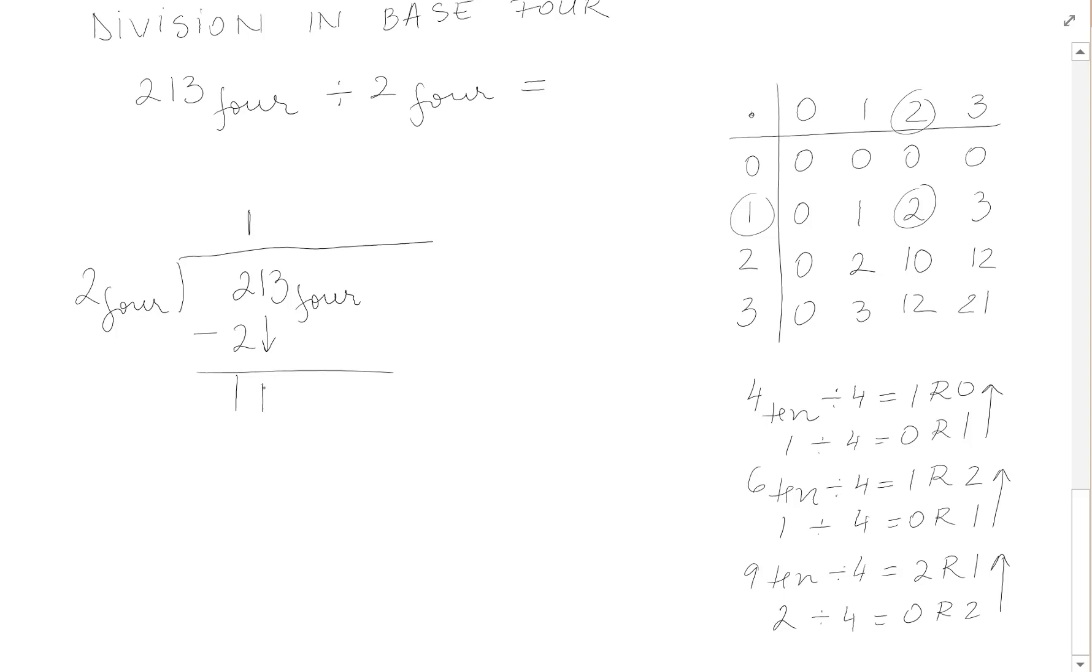2 in 1 goes 0 times. And now 0 times 2 is 0. And 1 minus 0 is 1. Let's bring down the 3.